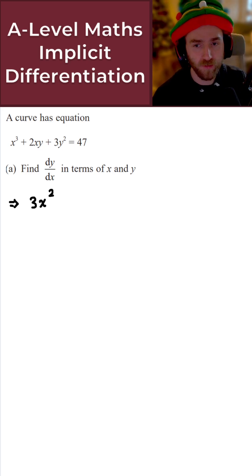Now for the next term, this is where things get a little more complicated, because we have a product of functions here. So we require the product rule. If I let u equal 2x and I let v equal y,